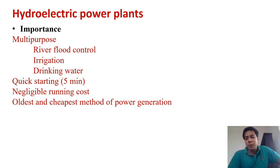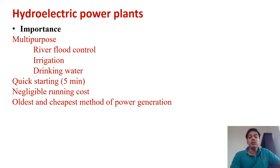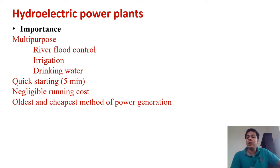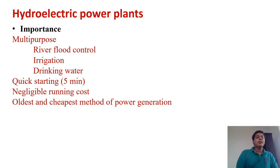Hydroelectric power plant is the oldest form of power generation — whether you take India or the world, it was the first one created. It is also cheaper, mainly because the concept of using the potential energy of water was already there from old times — that is why we used water wheels as prime movers for mills and different purposes. From there, we got the picture of how it can be used for power generation.